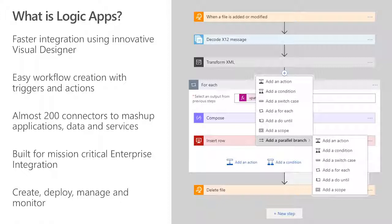How does a Logic App fire? It could be from an FTP server, where we're picking up files as they get processed. Or it could be from Twitter as new tweets are picked up from the queries that you provide. Or SQL Server or Oracle DB on-premises using our great on-premises data gateway. It provides easy workflow creation with these triggers and actions, and once you save your Logic App, it can be running straight away.